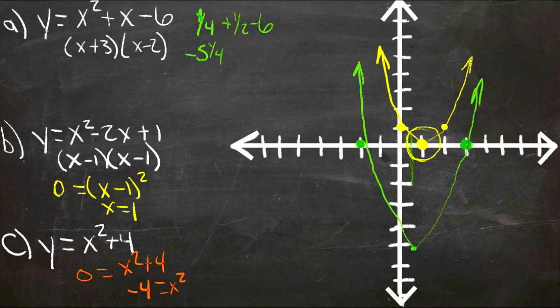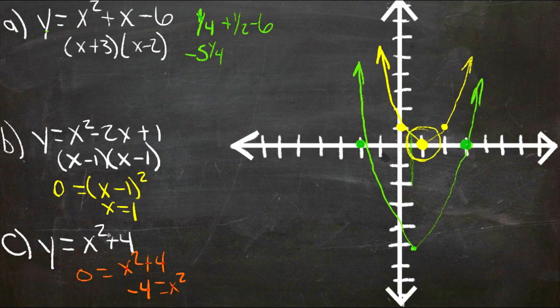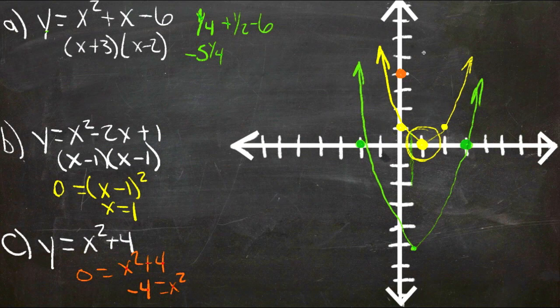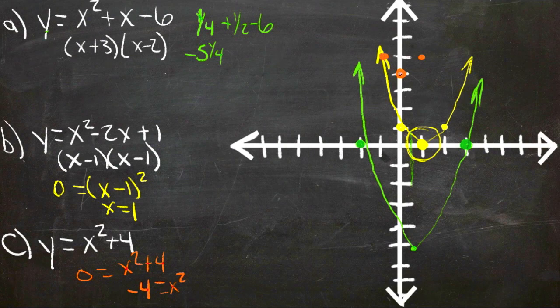We can find some points where the graph can be plotted, but none of them are actually going to touch the x-axis. So let's say what happens when x is 0. Well if x is 0, this cancels and y is 4. So we have a point right here. If x is 1, then y is 5. If x is negative 1, y is still 5. So this parabola goes up kind of like this, right on the y-axis.